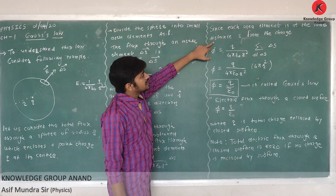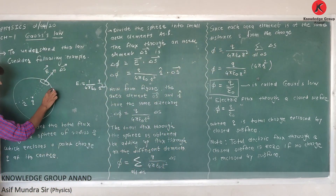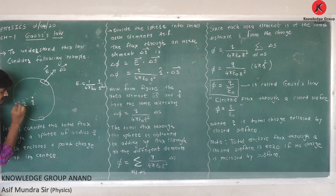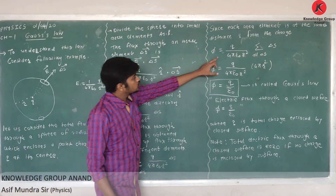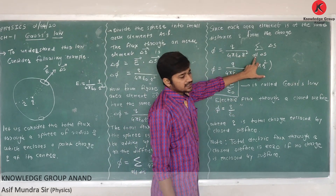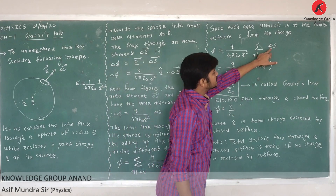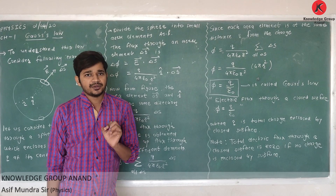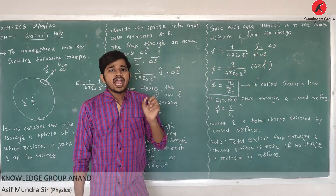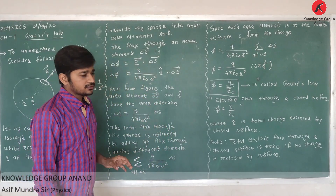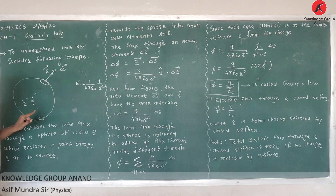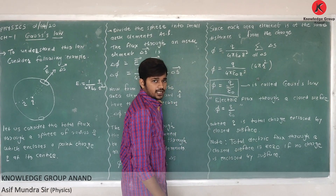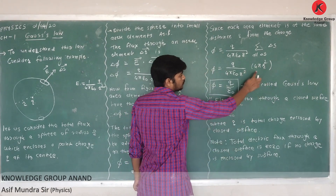Since each area element is at the same distance R from the charge, Q, 4πε₀, and R² are all constants. So φ = (Q/4πε₀R²) × Σ delta S. Now, Σ delta S is the sum of all the surface area elements — that is, the total surface area of the sphere, which is 4πR².